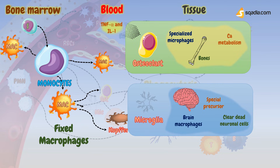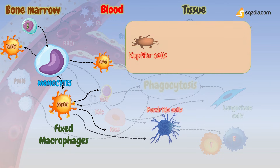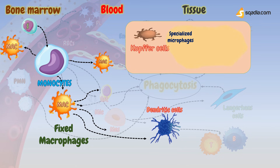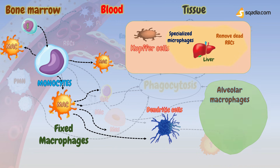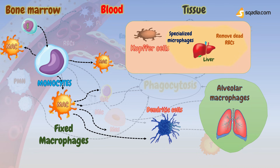Kupffer cells: specialized macrophages found in the liver, where they remove dying or damaged red blood cells and other material from the circulation. They make up a major fraction of the phagocytic cells in the body. Alveolar macrophages, as the name implies, contribute to the lungs' innate defenses and are involved in disease processes such as chronic obstructive pulmonary disease.